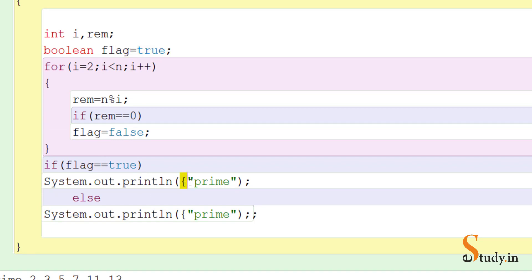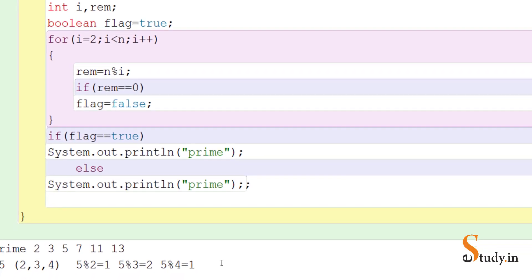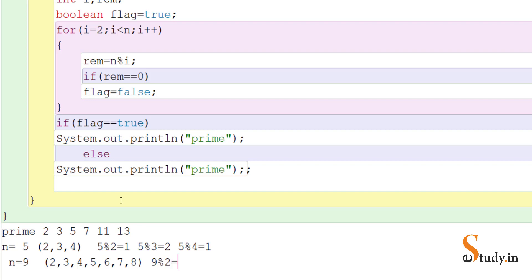Now let's check for a non-prime number. Suppose the value of n is nine. The loop will continue from two through eight. If nine is not divisible by any of these numbers it is prime; otherwise it is not. We start from two: nine mod two — the remainder is one, not zero, so two fours are eight, remainder is one. This if is not executed.